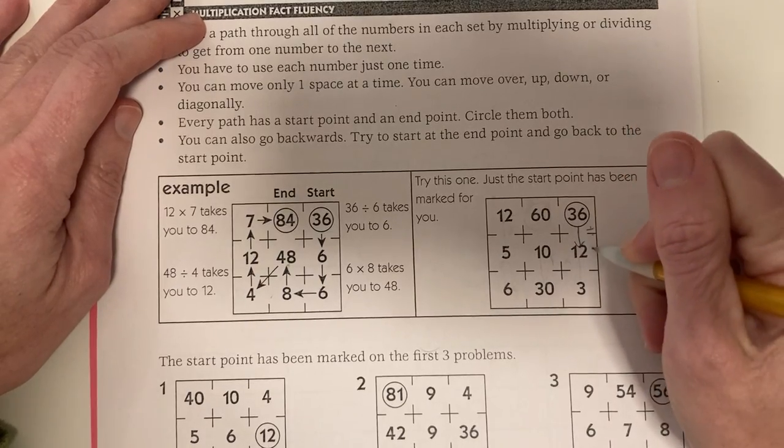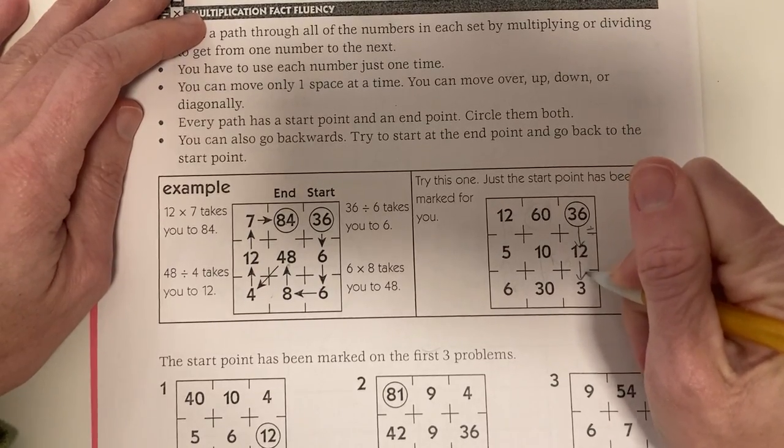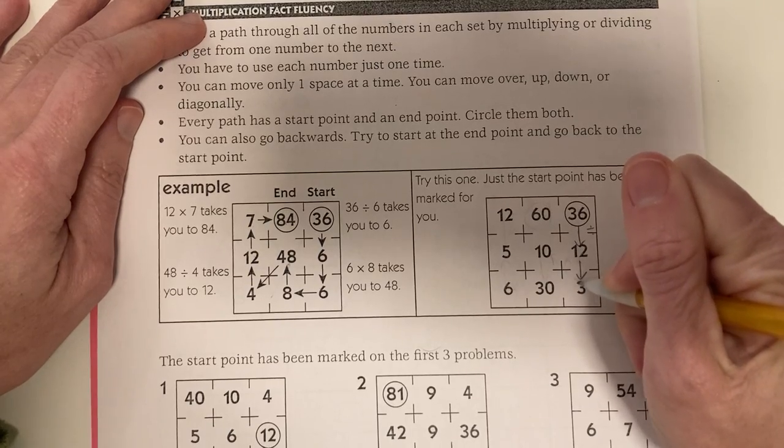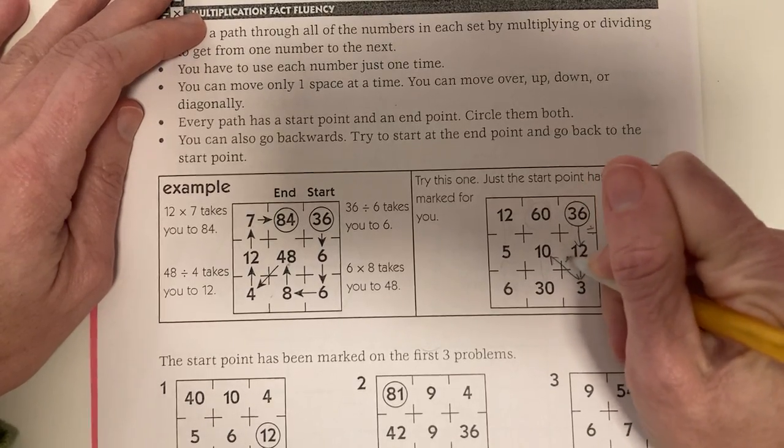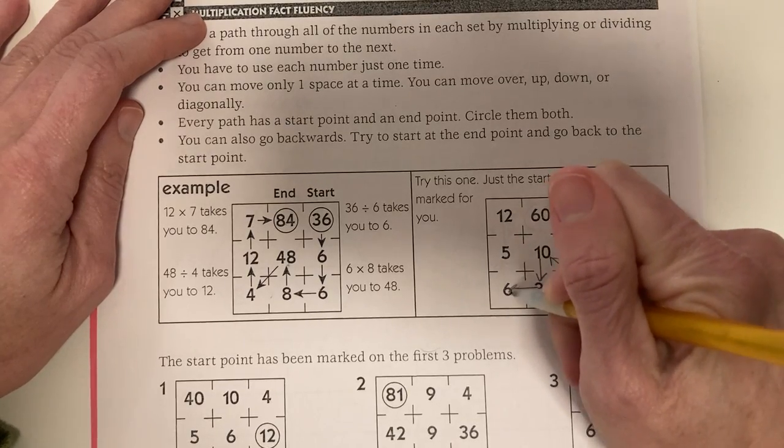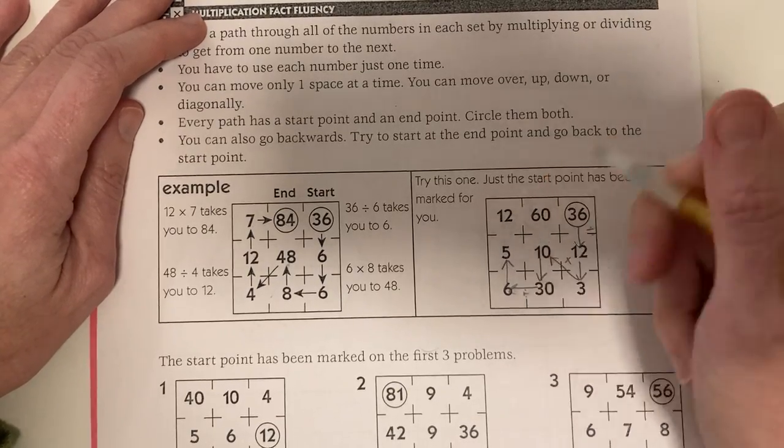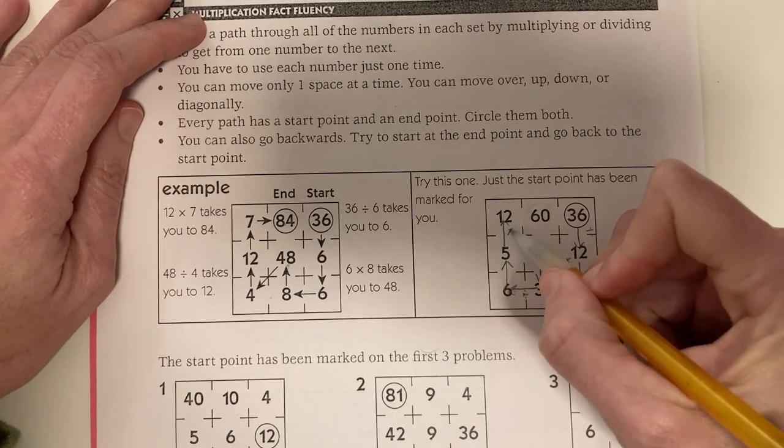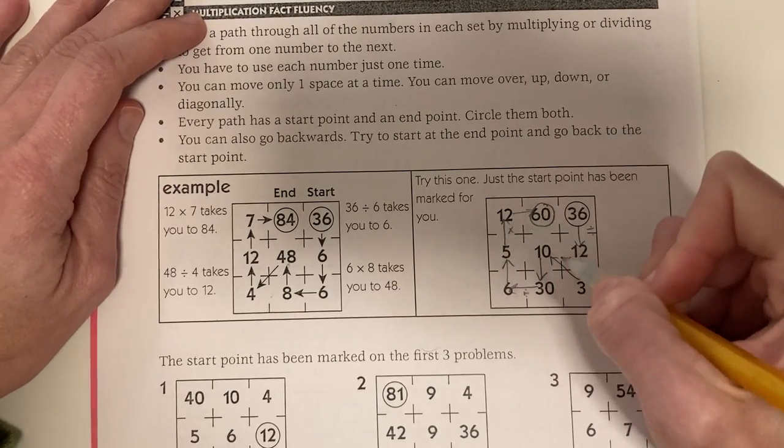36 divided by 12 is 3. 3 times 10 is 30. 30 divided by 6 is 5, and my final step, 5 times 12 is 60, and I can end right there.